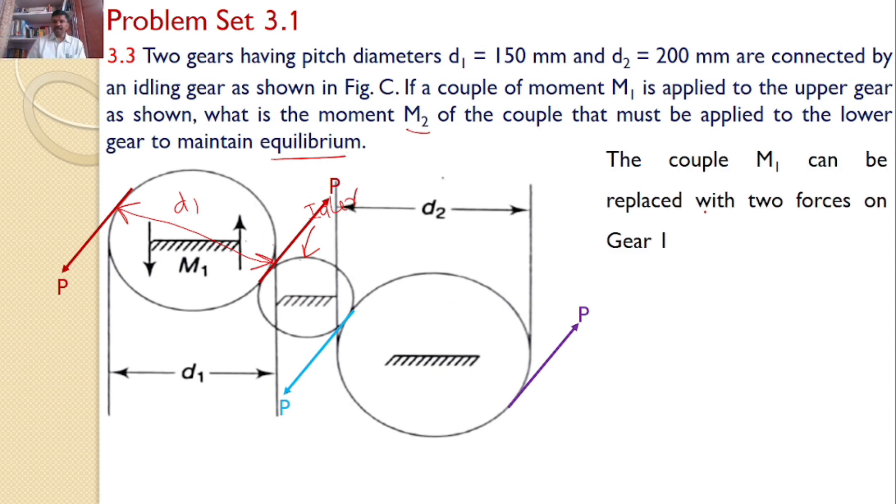The couple M₁ can be replaced with two forces P at gear 1. M₁ equals the couple produced by these two forces, which is force times perpendicular distance: M₁ = P × D₁.